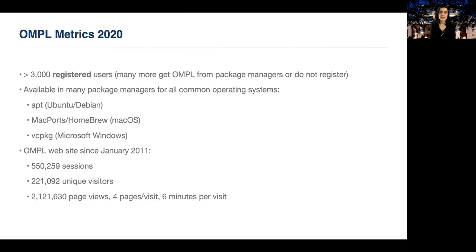Just to give you a few statistics, now we have around 3,000 registered users, and many more get to OMPL from package managers or do not register. The GitHub repository of OMPL has been forked 280 times. I sincerely hope that if people who have forked the library have further additions to the library, they will contribute this back to the open source repository so that the library remains a valuable resource for the robotics community. Our web page for OMPL since January of 2011 has had more than half a million sessions, more than 200,000 unique visitors, and more than 2 million page views.